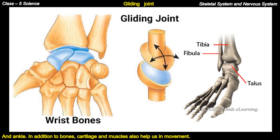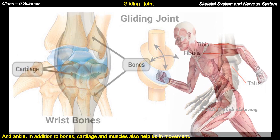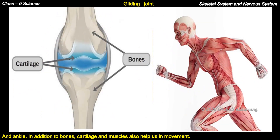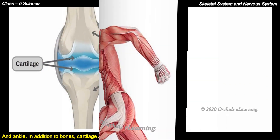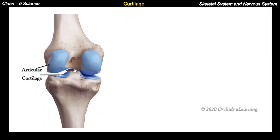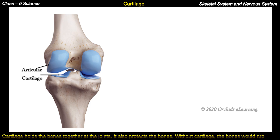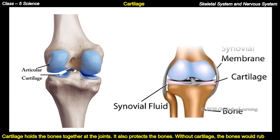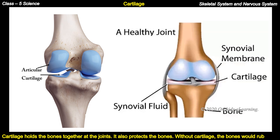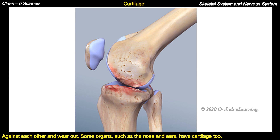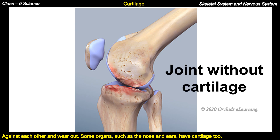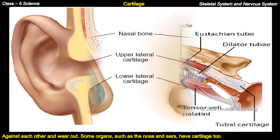In addition to bones, cartilage and muscles also help us in movement. Cartilage holds the bones together at the joints and also protects the bones — without cartilage, the bones would rub against each other and wear out. Some organs such as the nose and ears have cartilage too.